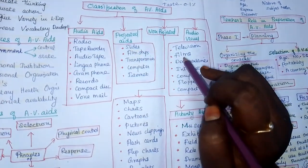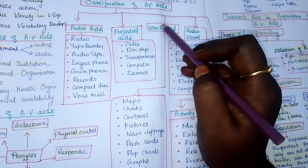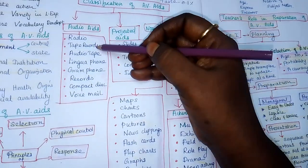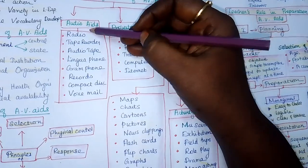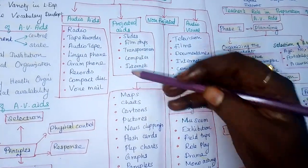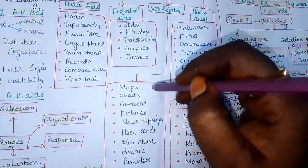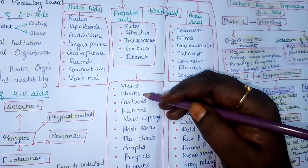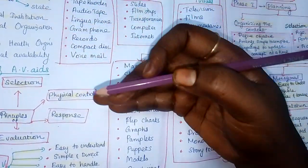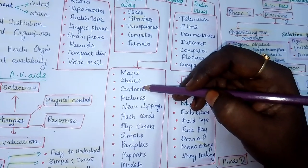Audio aid, visual aid — which includes projected aid and non-projected aid — and audiovisual aids and activity aids are the main classifications. For maps or posters, write the definition, then the criteria for selection of a poster. Only one concept should be on a poster, only a few colors should be used, the teaching content should be unique, and it should not repeat content already covered on a chalkboard or other aids.